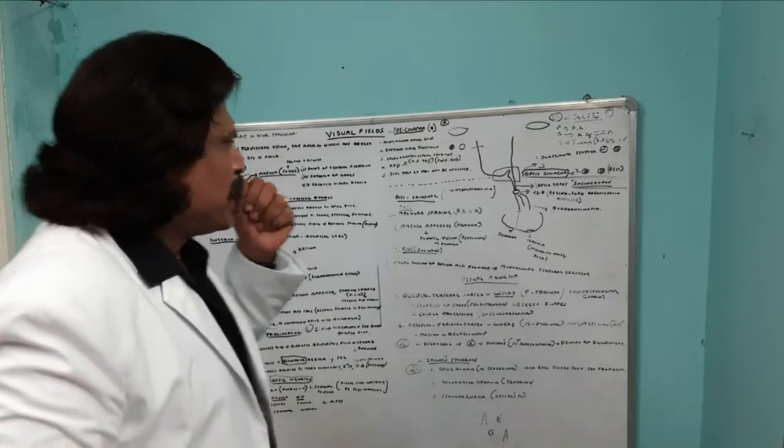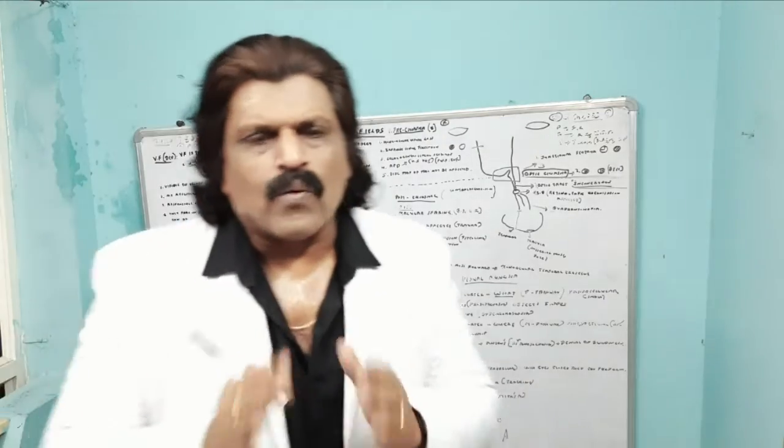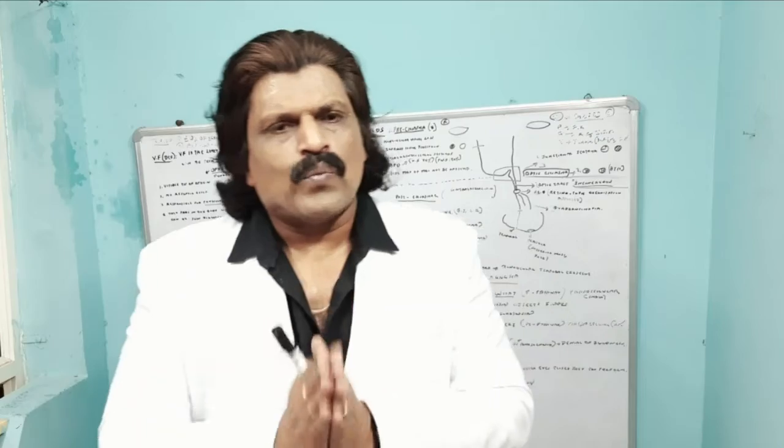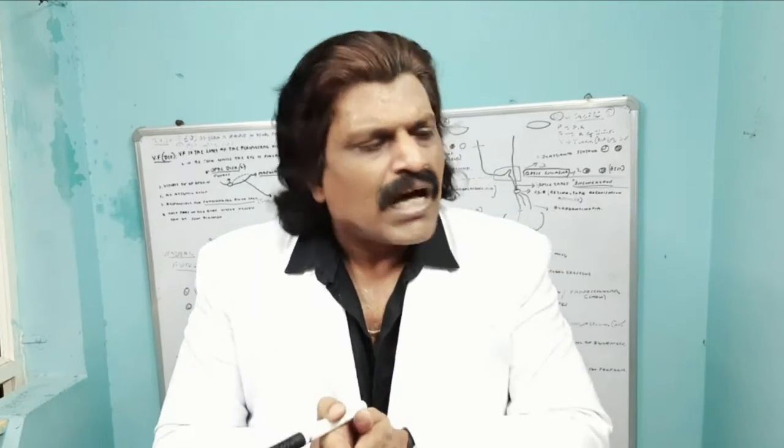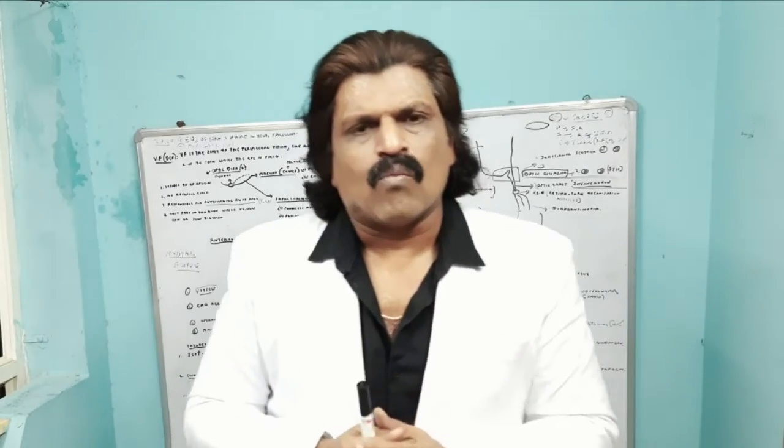Now we will come to the visual fields. How do we approach visual field defects? We can approach by three broad categories: one — pre-chiasmal lesions; two — chiasmal lesions; three — post-chiasmal lesions.